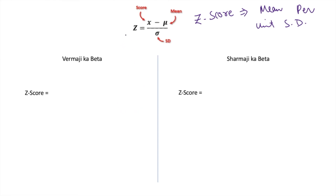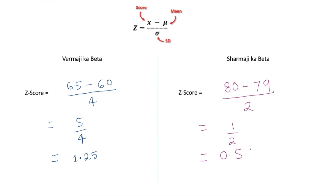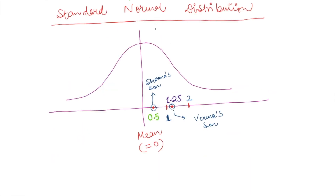So unknowingly, we are going to calculate the Z-score for both Wamaji's son and Sharmaji's son. The Z-score for Wamaji's son came out to be (65 − 60) / 4 = 5/4 = 1.25. Similarly, for Sharmaji's son it came out as 0.5. By calculating the Z-score we have brought both scores onto the same scale — the standard normal distribution.